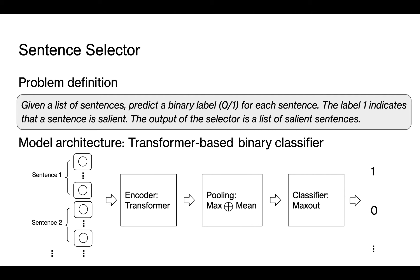The goal of salient sentence selector is to identify the salient sentences from a document. We model this as a binary classification problem. Given a list of sentences, the selector predicts a binary label for each sentence. The label 1 indicates that a sentence is salient. The output of the selector is a list of salient sentences.